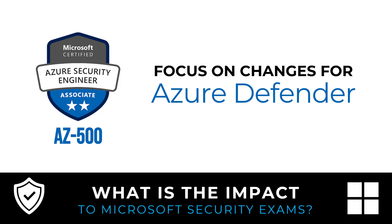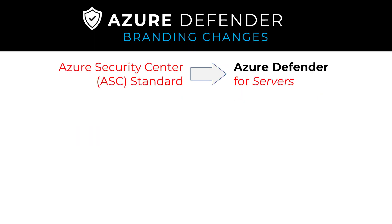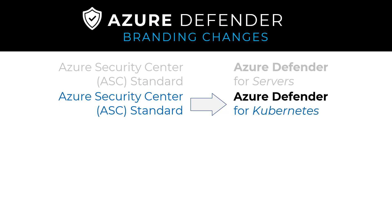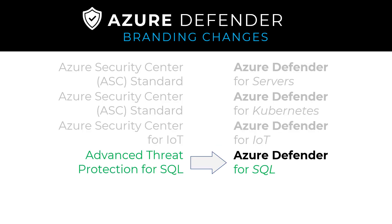There are some details worth unpacking that may prove important on the exam. With the branding changes, Azure Security Center Standard is now referred to as Azure Defender for Servers, and you'll see Azure Defender for Kubernetes referenced. I didn't mention that as an explicit skill measured, but AZ-500 is not an exhaustive list — you may see curveballs. Azure Defender for IoT and Advanced Threat Protection for SQL, now referred to as Azure Defender for SQL, are also in scope. When you go to the Azure portal, the functionality is the same — it just appears under the new name.